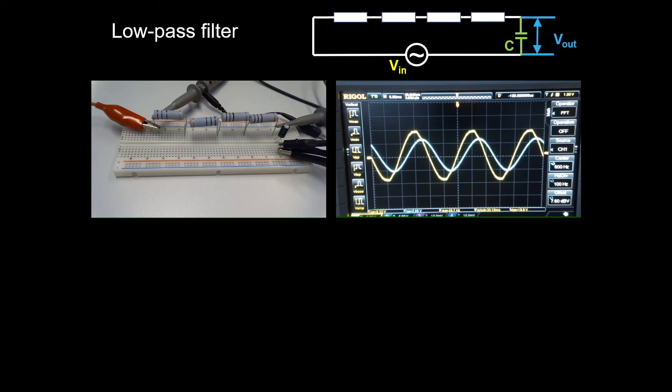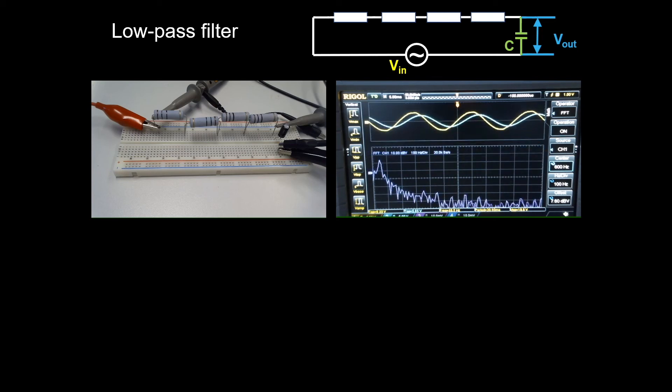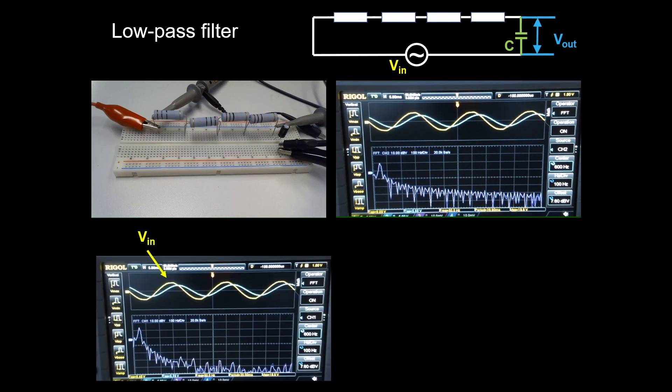We can see in the Fourier transform the input signal looks something like this with higher harmonics here and here. And if you look at the one after the capacitor, this is what the frequency section looks like. Now we can get rid of all the high harmonics except the 50 Hertz.